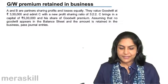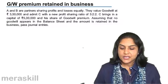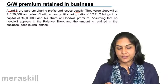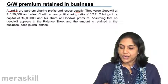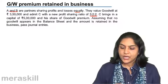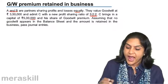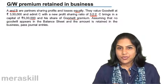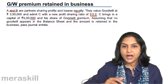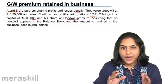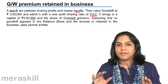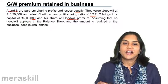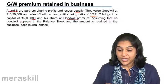Goodwill premium retained in business. A and B are partners sharing profits and losses equally. They value goodwill at 3,50,000 and admit C with a new profit sharing ratio of 3:2:2. C brings in a capital of 5 lakh and his share of goodwill premium. We need to find the goodwill premium, given that goodwill does not appear in the balance sheet. The amount is retained in the business. We need to pass journal entries.